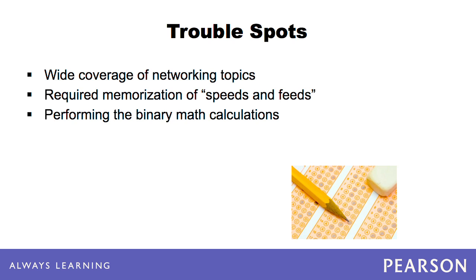You should, for example, be able to take a given IP network and subnet it into a certain number of subnets to support a certain number of hosts, and be able to identify the usable IP address range in each of these subnets. The vast majority of the test is multiple choice, and it requires the ability to choose a correct answer from a number of distractor options. Make sure to read the entire question and understand what they're looking for before making your choice.